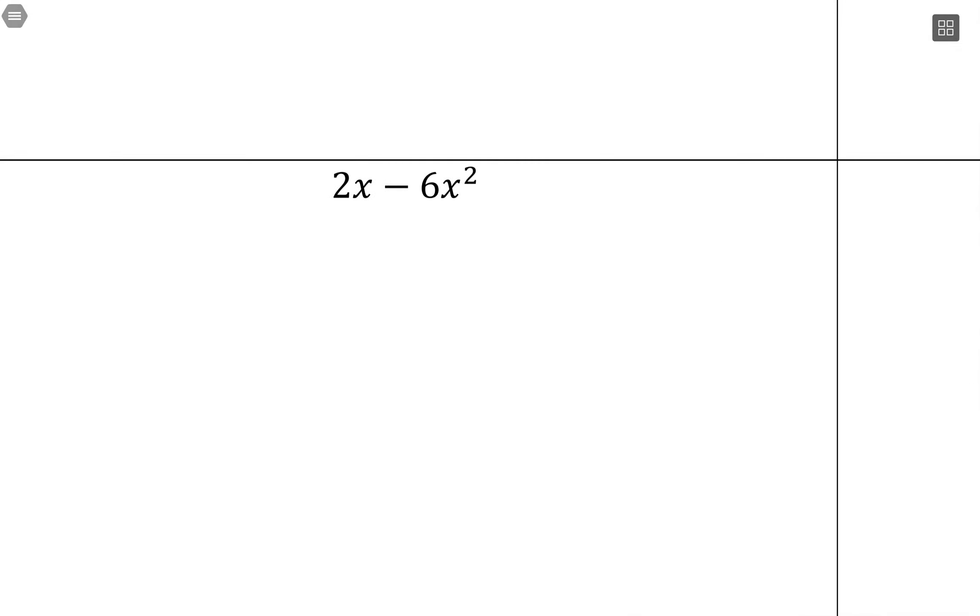With this one, we have a common factor of 2 and x. So we can factor out 2x, and that'll leave us with 1 minus 6 divided by 2 is 3, and we'll still have 1x left over. So in this form, it's like sine of t is where we had x.